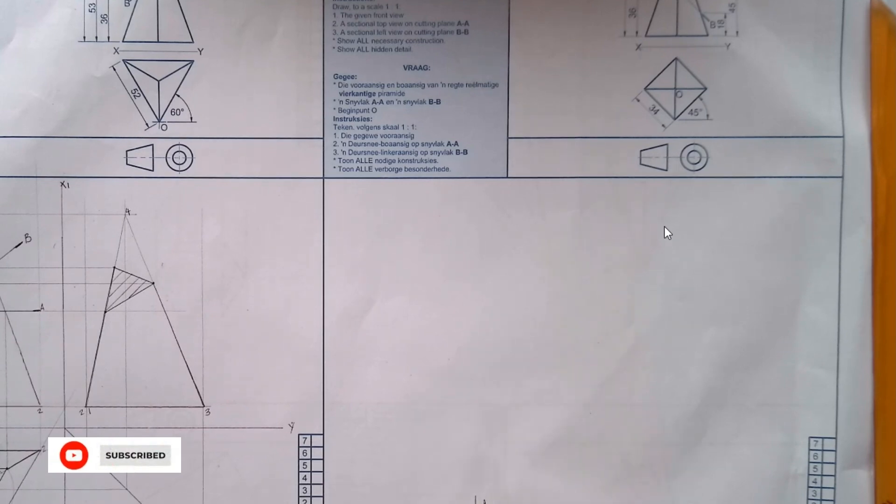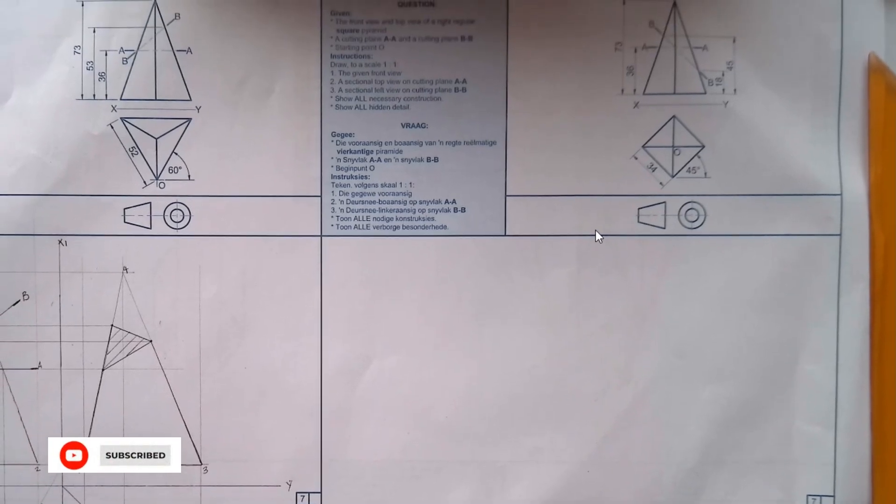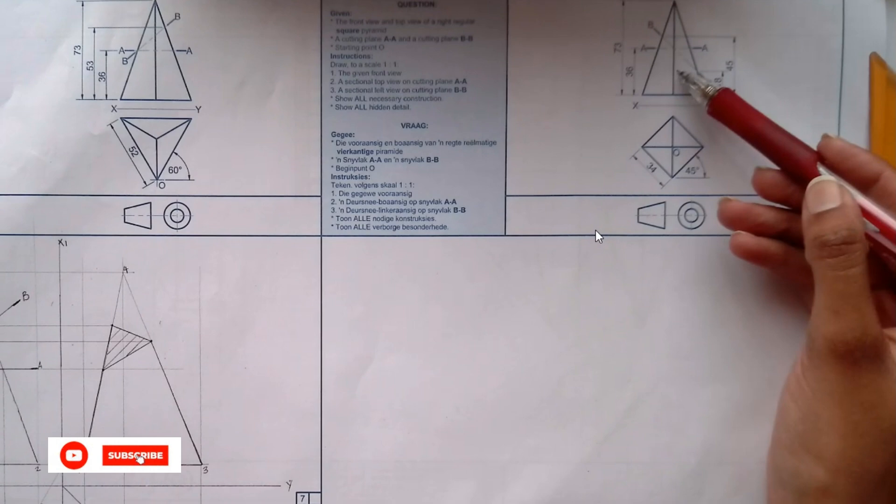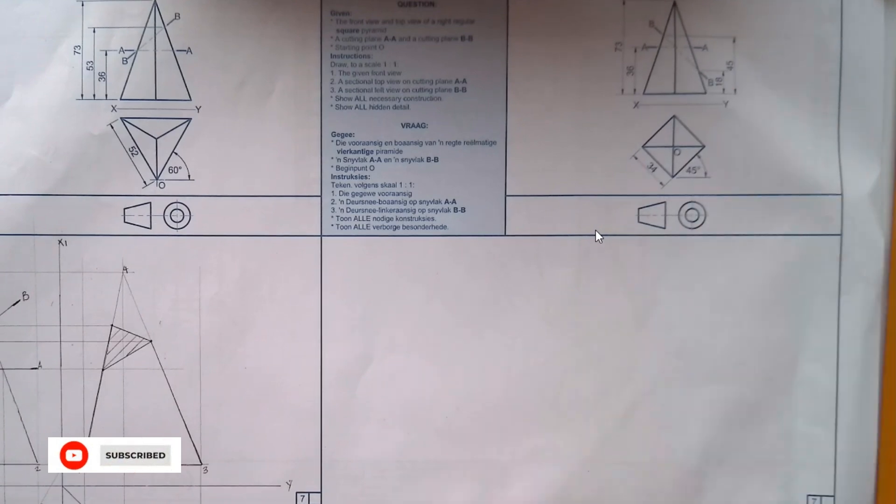We are still given the starting point and we are asked to draw the given front view, the sectional top view and the sectional left view. So this is what we are given and then we will just copy it down.